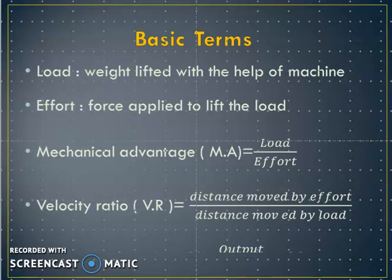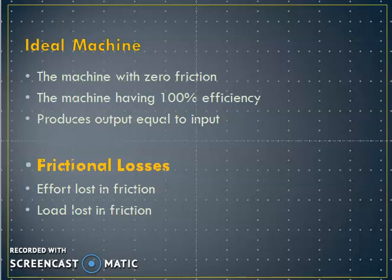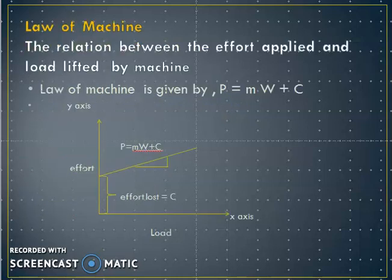The law of machine defines the relation between the effort applied and the load lifted by the machine. If we record the effort required to lift corresponding loads and plot a graph with load on the x-axis and effort on the y-axis, we get a straight line graph whose equation is P = M × W + C, where P is effort, M is the slope of the graph, W is the load, and C is the effort lost in the machine, also called the frictional constant.